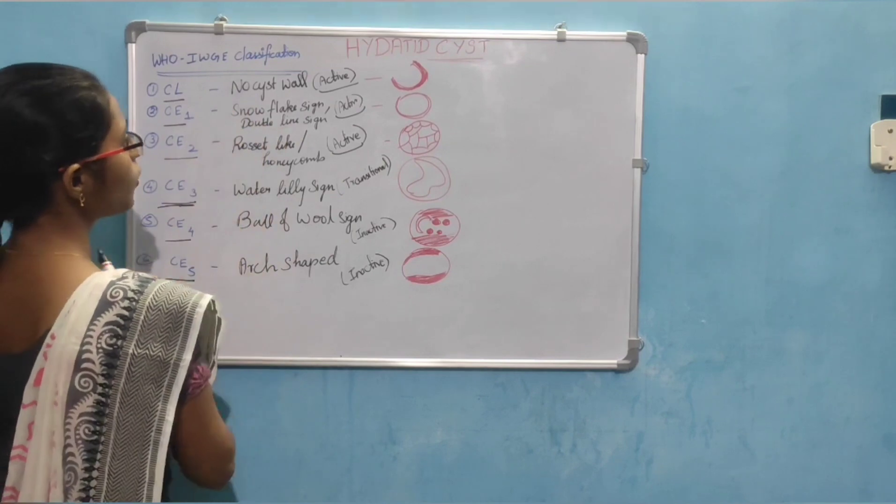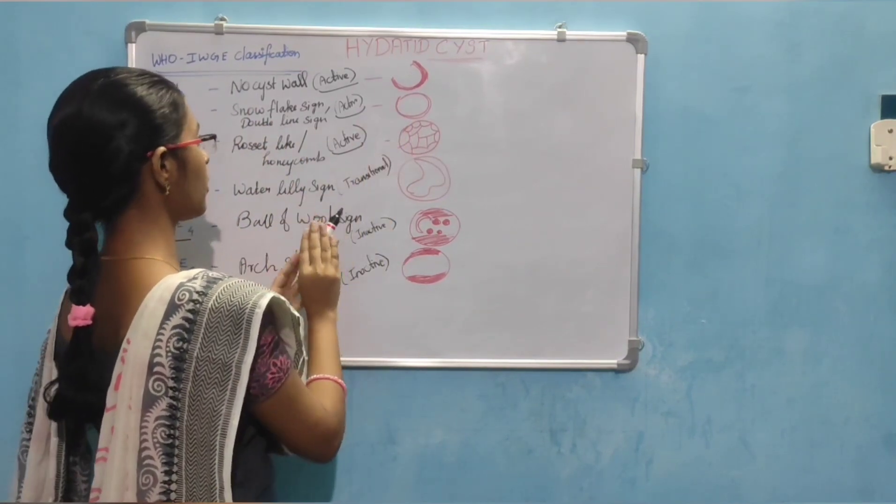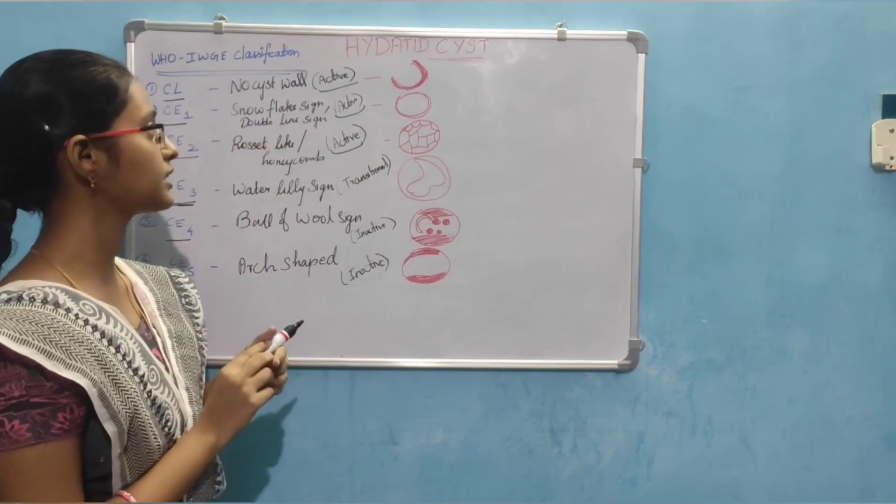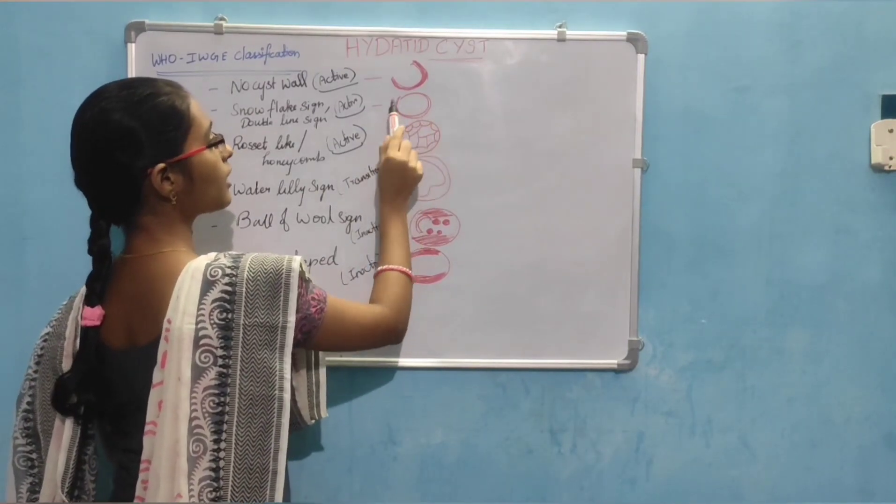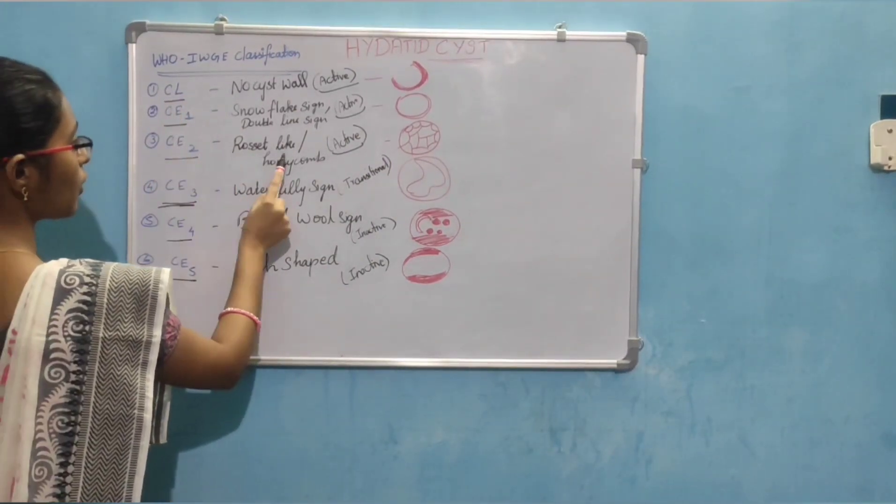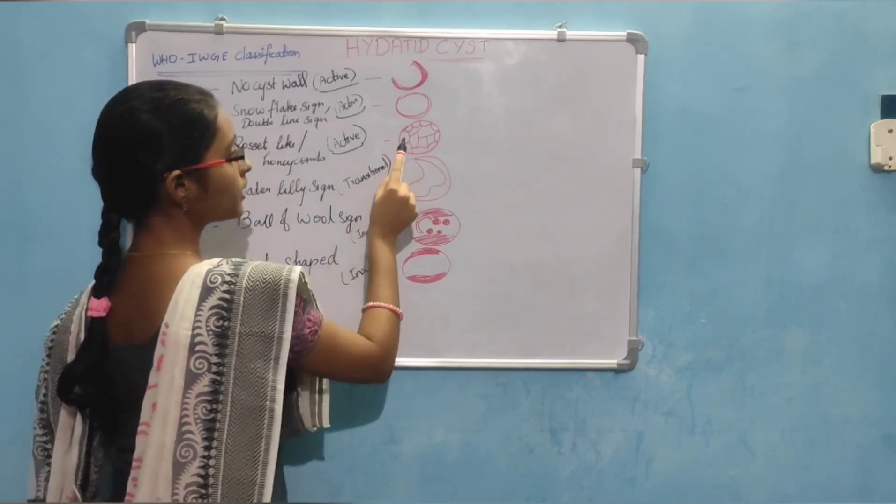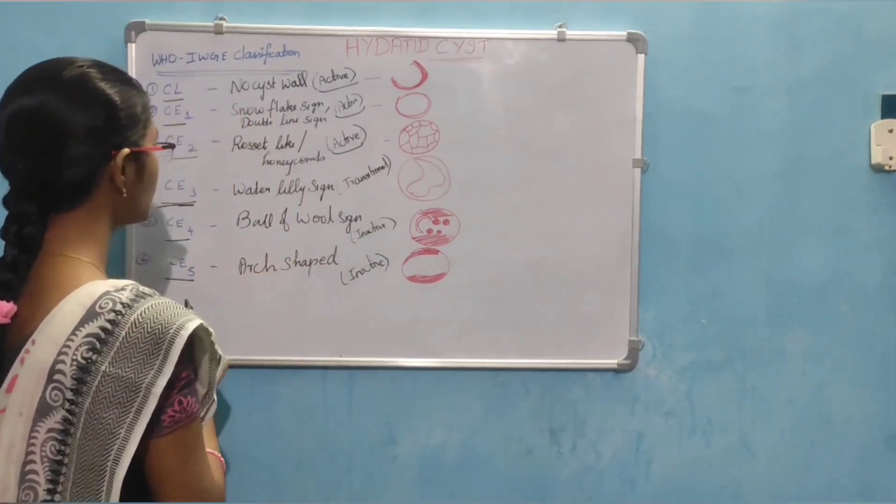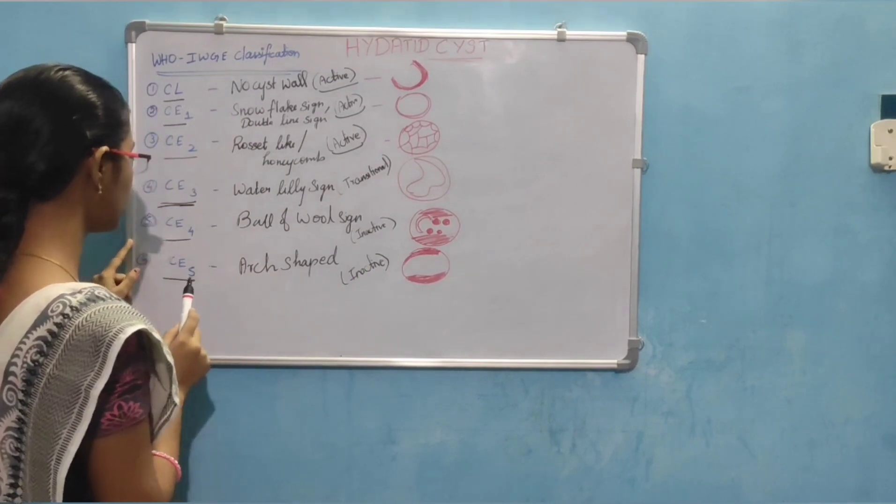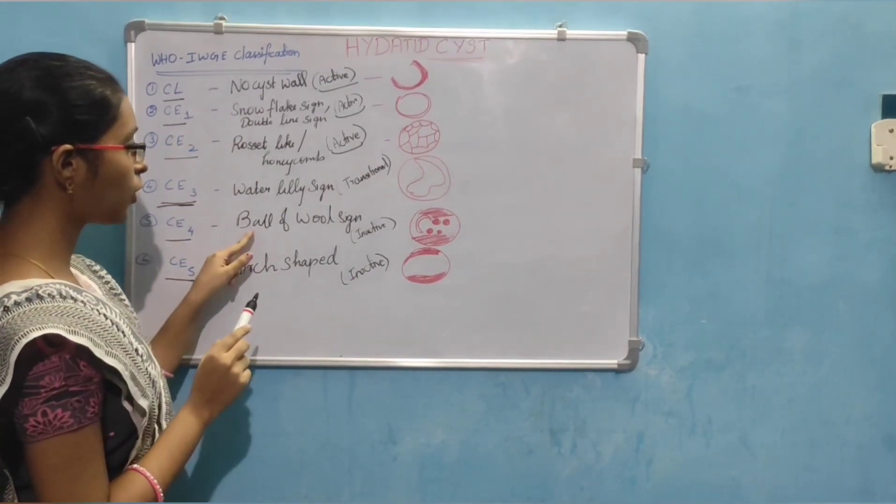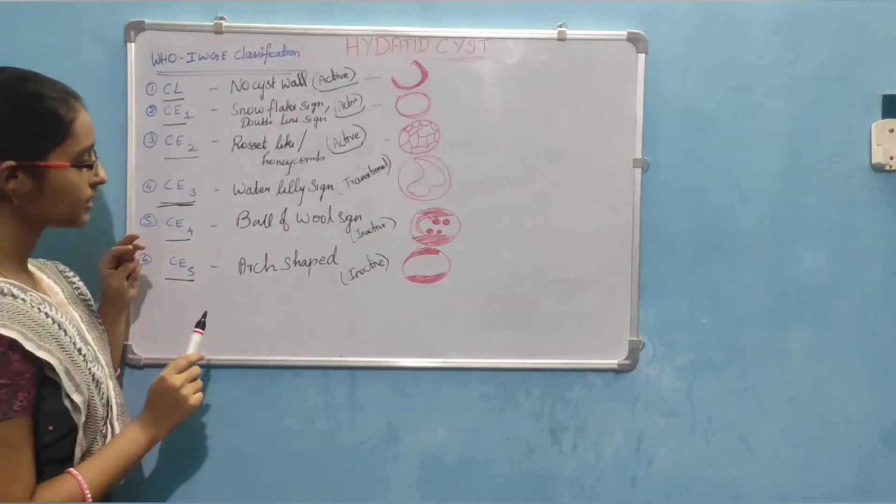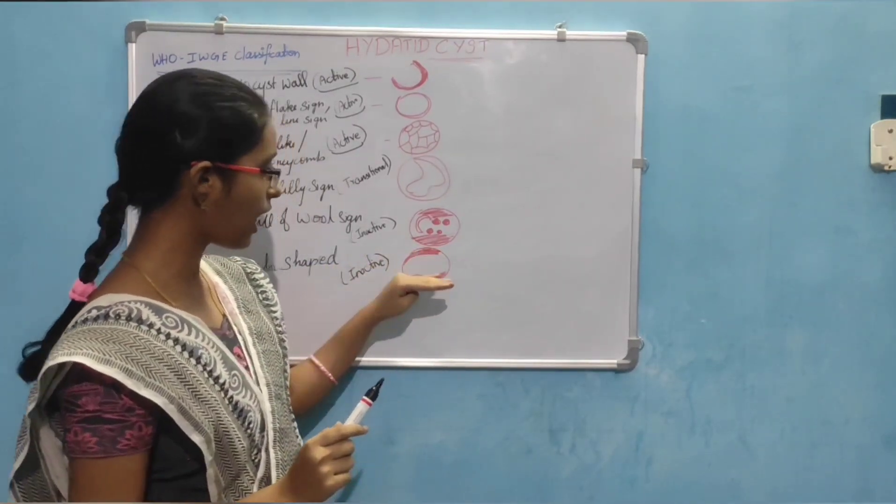So CL contains no cyst wall, just a cyst without cyst wall. And CE1 shows double line sign and snowflake sign. CE2 is rosette-like or honeycomb-like. Water lily sign is CE3. This is the water lily sign of CE3 classification. And CE4 is ball of wool sign. And CE5 is arch shaped.